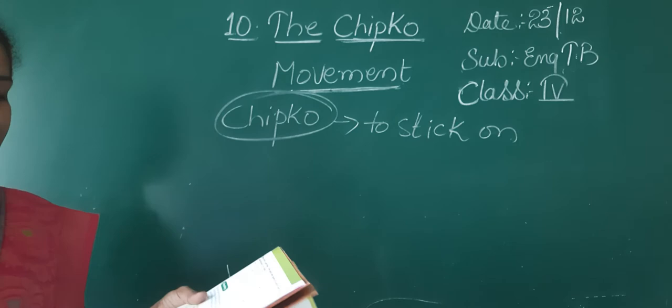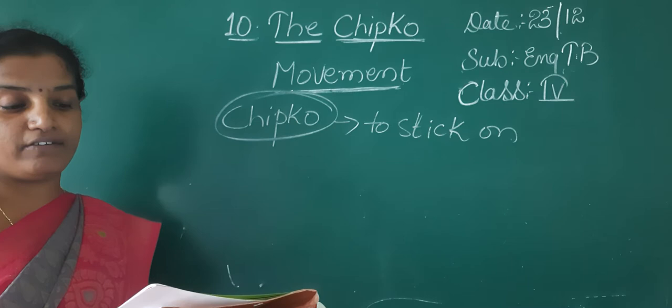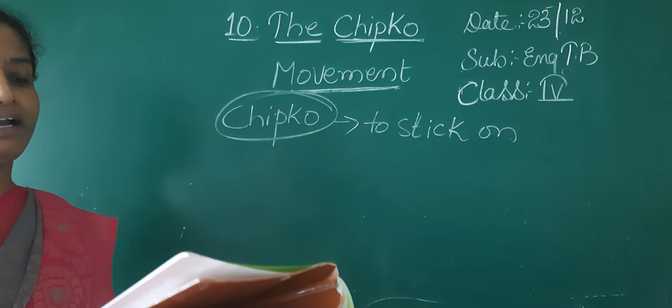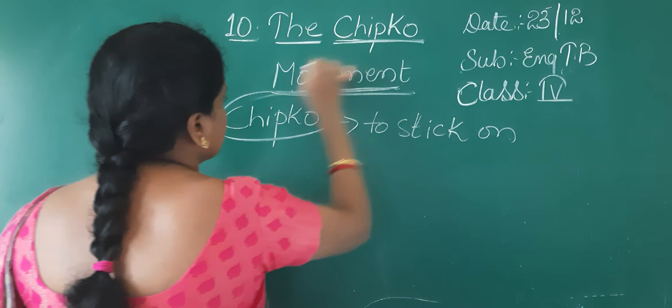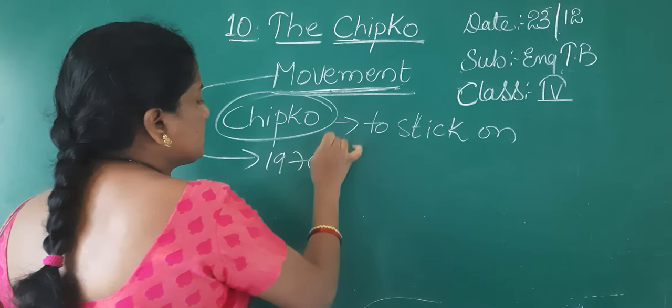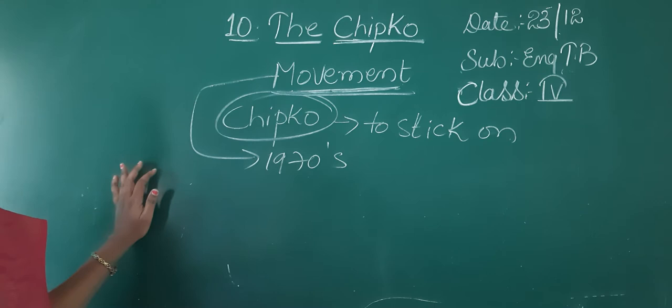Chipko means to stick out for a tree. See children, ordinary people can sometimes make a big difference. One example of this is the Chipko movement. The Chipko movement in the 1970s — this Chipko movement came into existence in the 1970s.